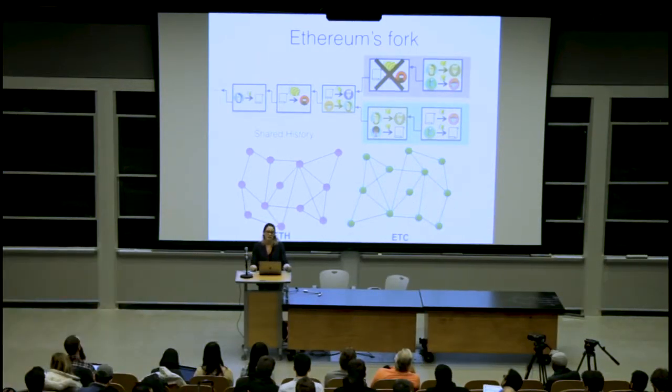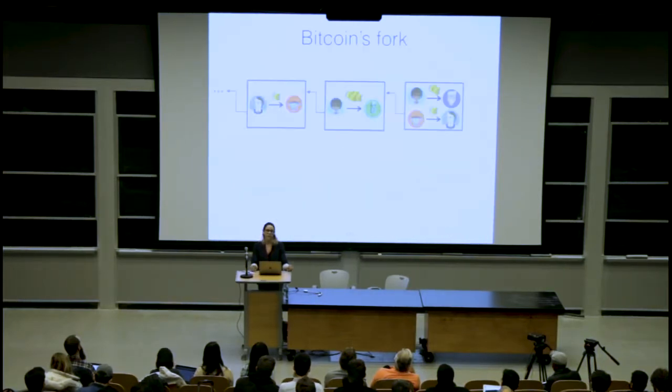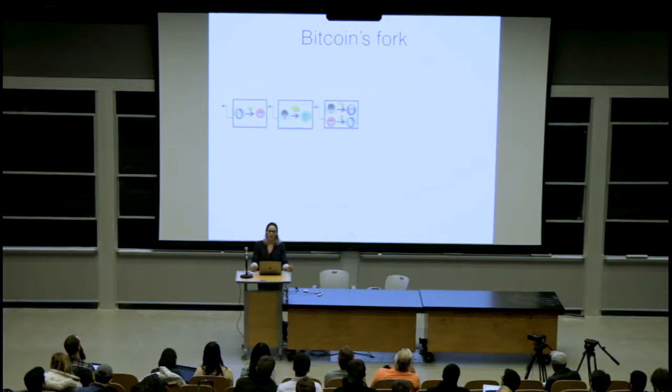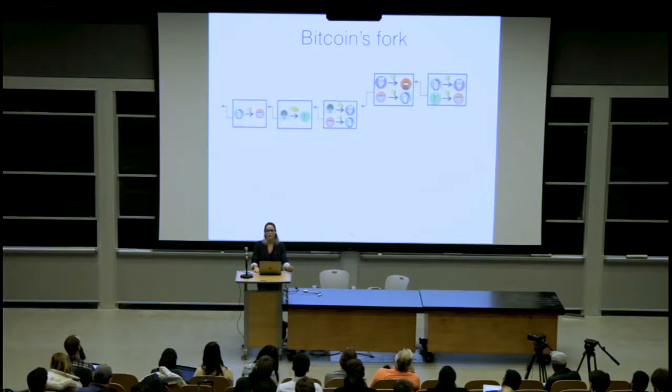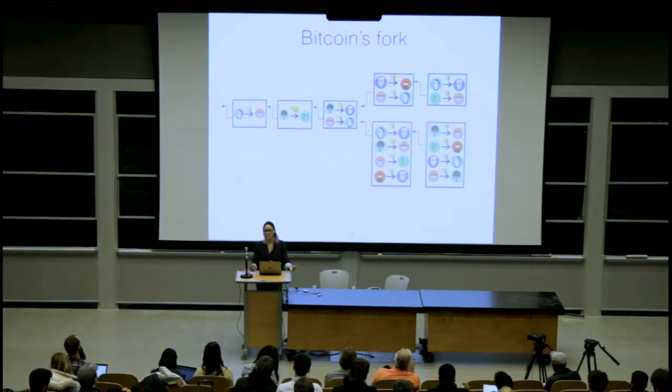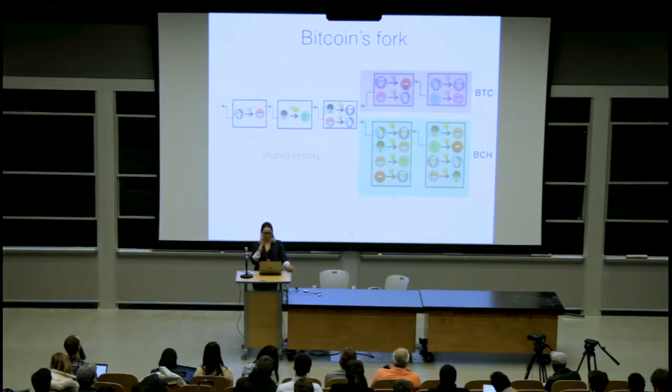The Bitcoin fork was a little bit different where you have the old network existing keeping the same protocols as it was, and then a new protocol of Bitcoin Cash that was introduced which mainly made block sizes bigger to handle more transactions. But again you have a shared history. Any money that existed before the fork, now you have two versions of it.